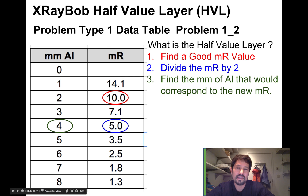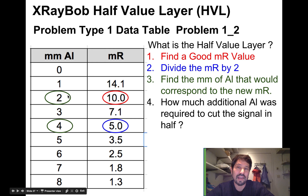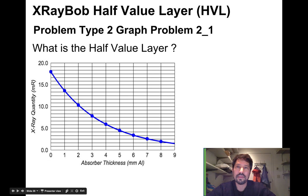I'm at five milli-Roentgens after going through another two millimeters of aluminum. So here I'm down to half the intensity. I've got four millimeters of aluminum in front of my beam. I started with two millimeters. So the additional aluminum to cut the signal in half from 10 to 5 was four minus two or two millimeters of aluminum.